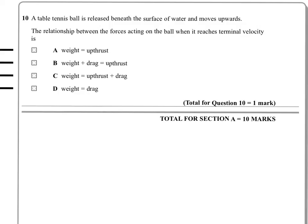Question 10. A table tennis ball is released beneath the surface of water and it moves upwards. The relationship between the forces acting on the ball when it reaches its terminal velocity will be what? Okay, so remember, when it reaches terminal velocity it's traveling at a steady speed. And Newton told us that any object traveling with a steady speed has balanced forces on it. It has no resultant force. And so you'll find at that point that the magnitudes of the upward and downward forces are equal.